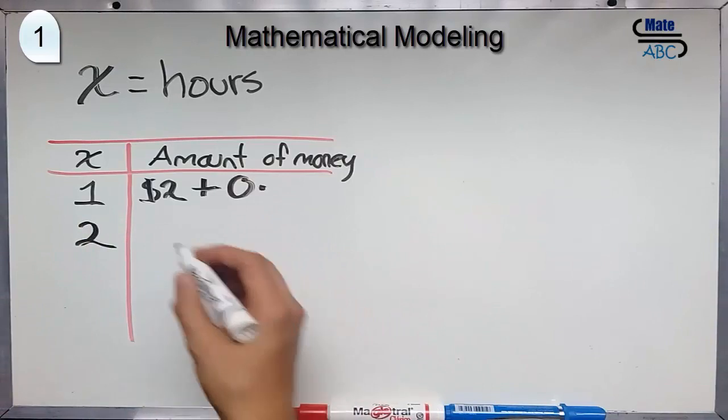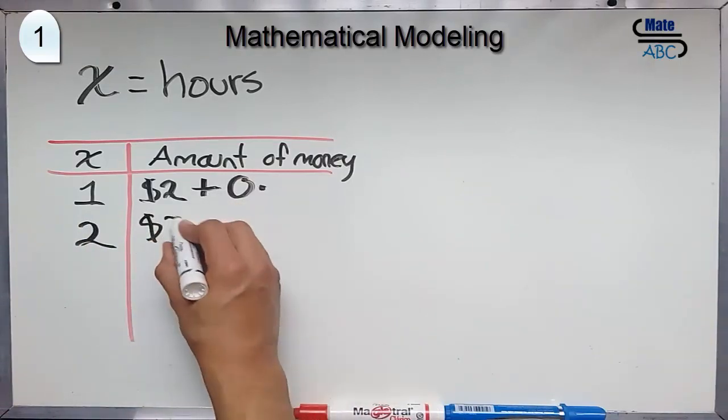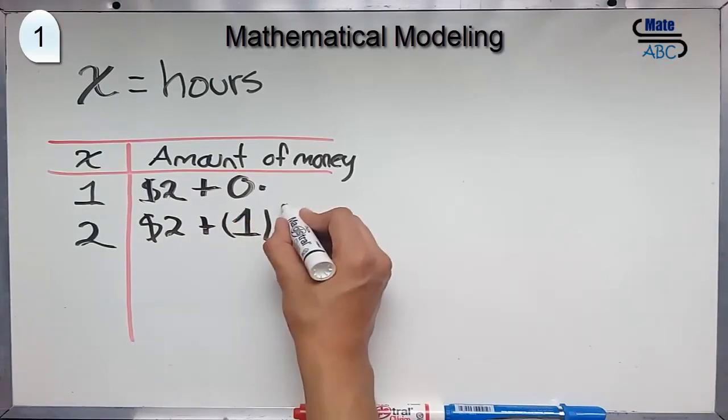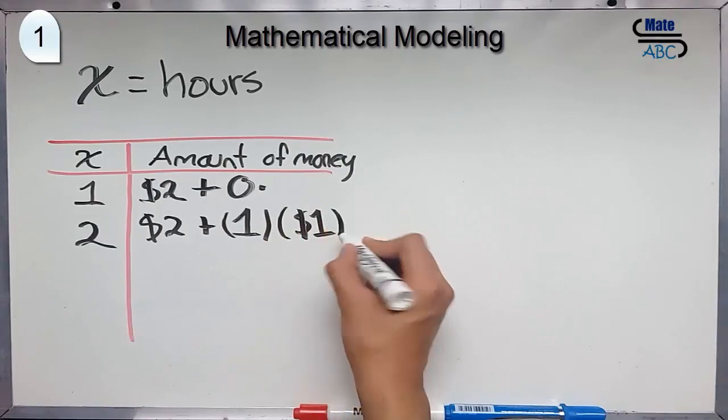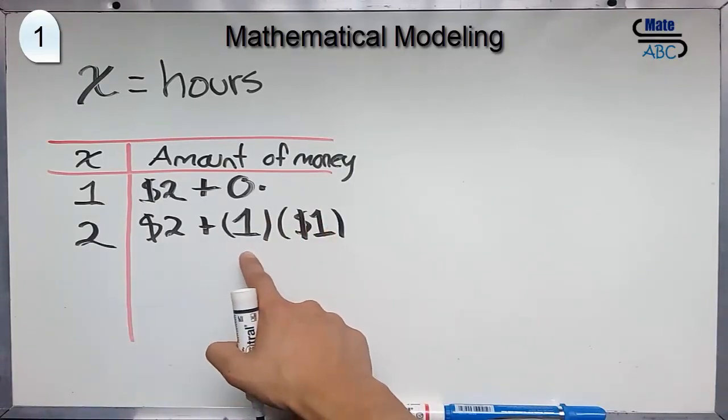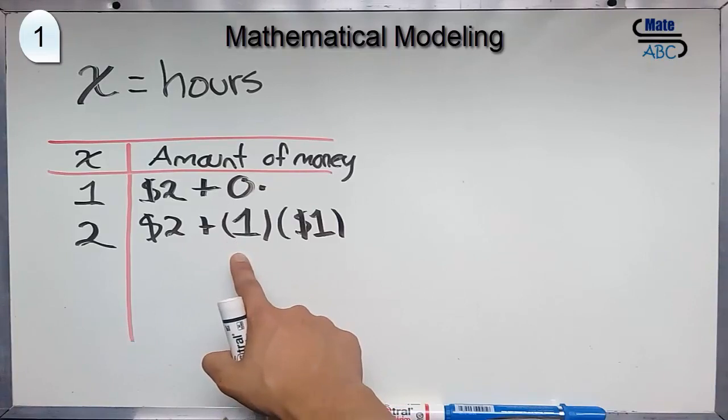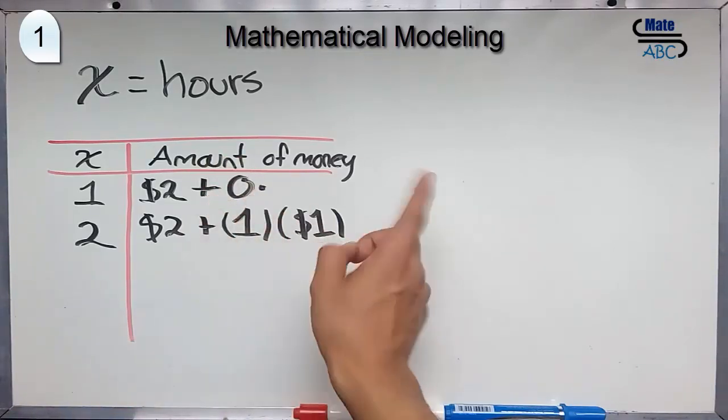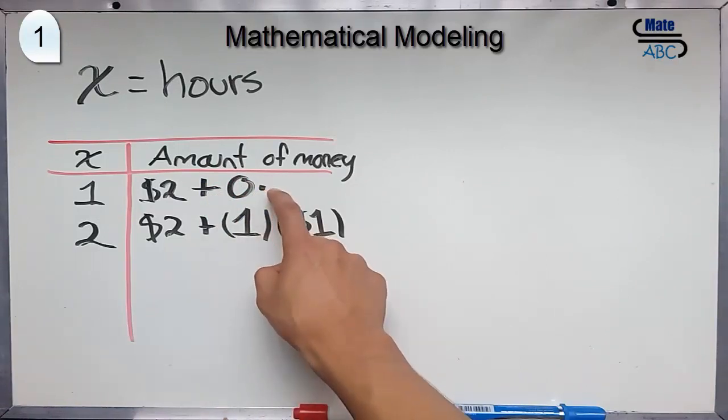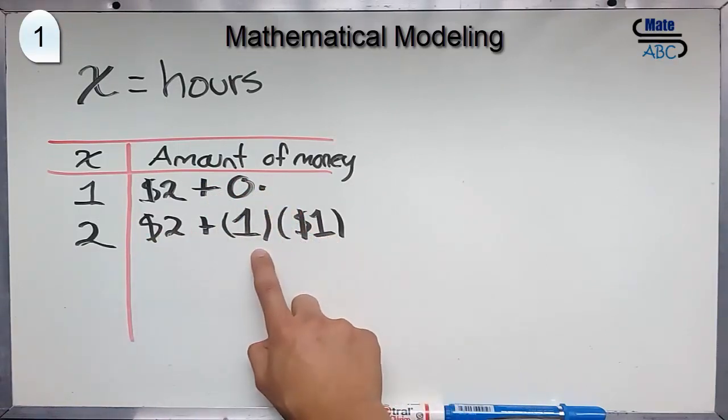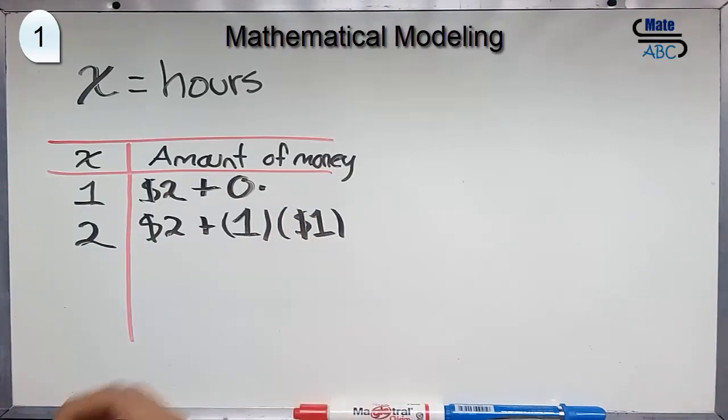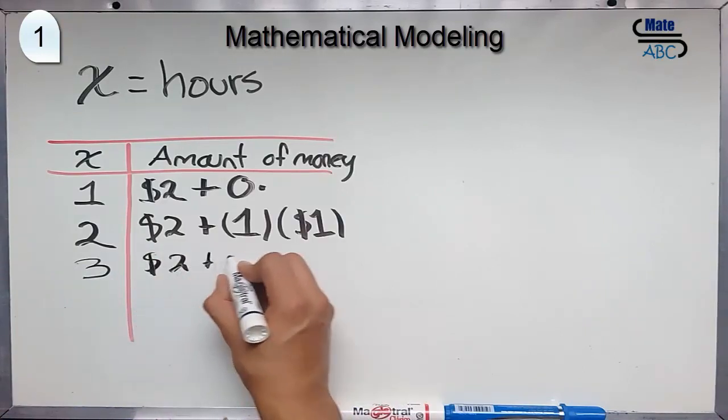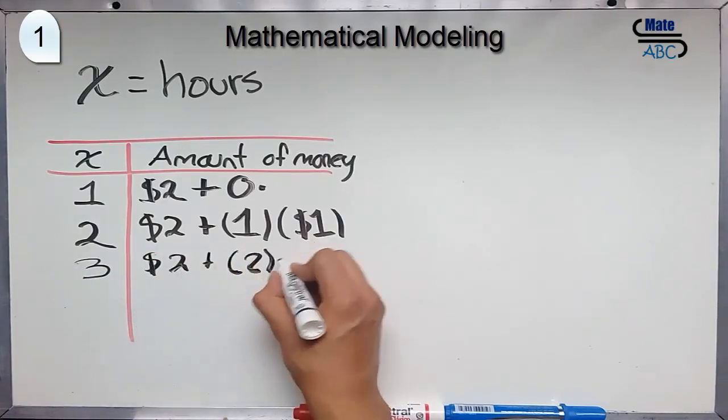In the second hour, you will be charged $2 plus 1 times $1. Because this is the first additional hour.